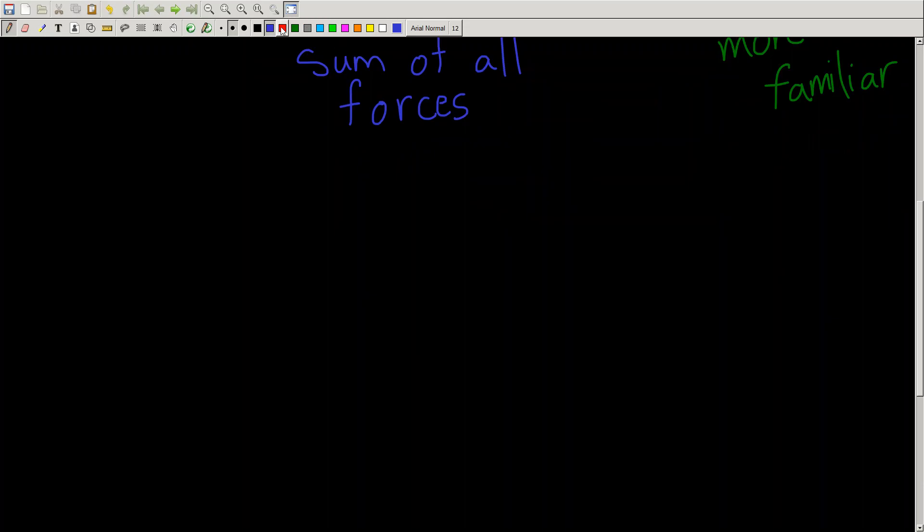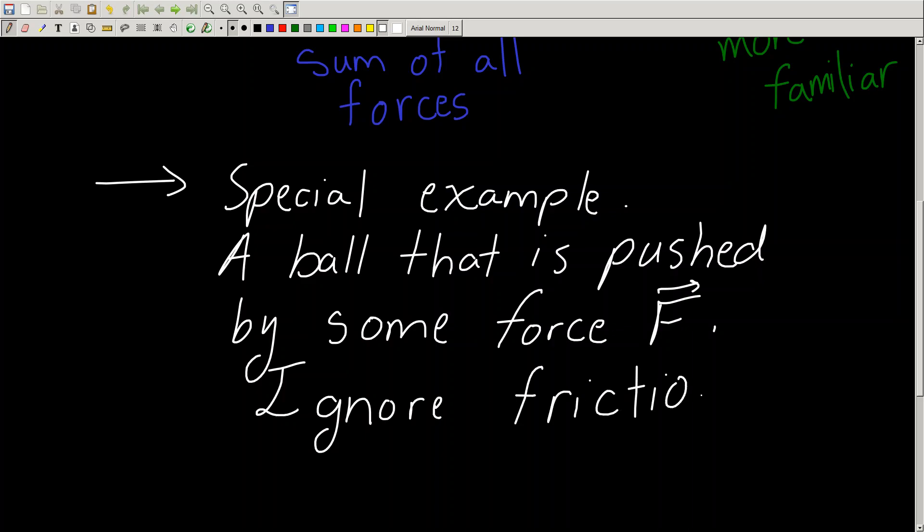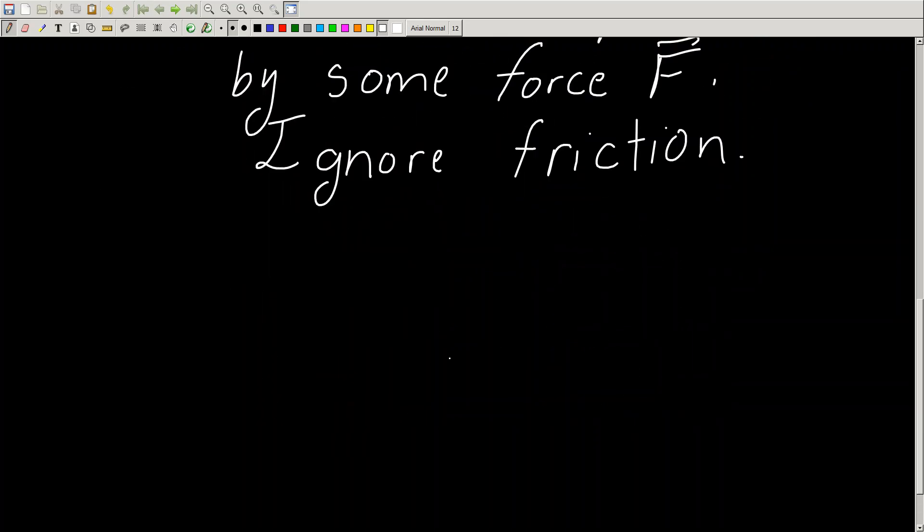So let's talk about an object that has only one force applied to it. So special example. We're going to look at a ball that is pushed by some force F. And what we're going to do is we're going to ignore friction. And again, that's something that we're going to do often in this crash course. So you get a ball and you've got some force F, and the ball's mass is M.